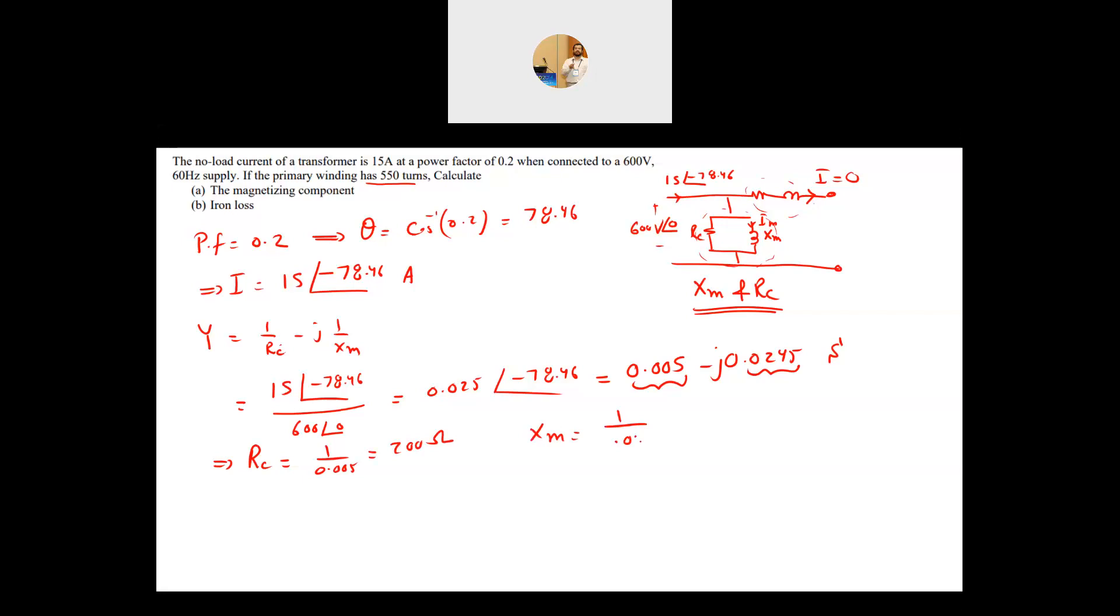Now the problem becomes trivial, very straightforward. Your IM, the magnetizing component of the current, by Ohm's law is equal to the voltage, 600 angle of zero, divided by XM which is j 40.82. This will give me a current equal to 14.7 angle of minus 90, because this j means that this is basically 40.82 angle of plus 90.